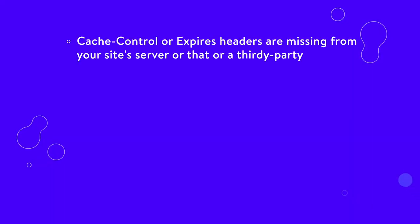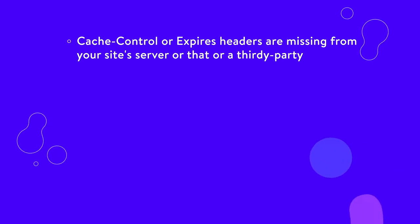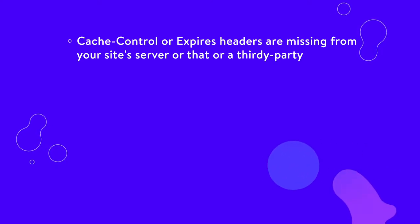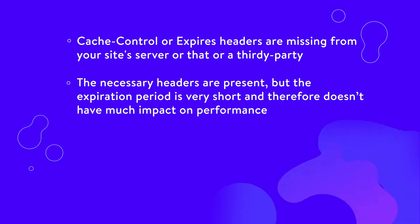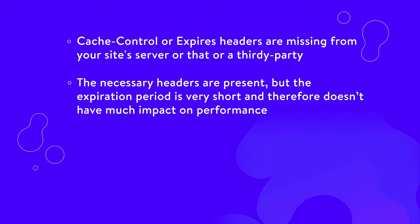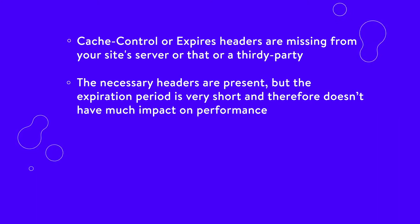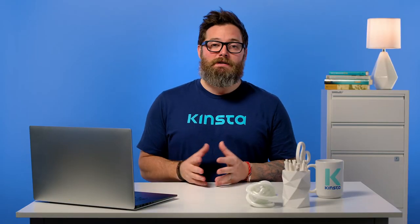If you're seeing the Leverage Browser Caching Warning in your performance test results, it likely means one of two things. One, the cache control or expires headers are missing from your site's server or that of a third party. Two, the necessary headers are present, but the expiration period is very short and therefore doesn't have much impact on performance. The solutions to this warning involve fixing one or both of these issues.